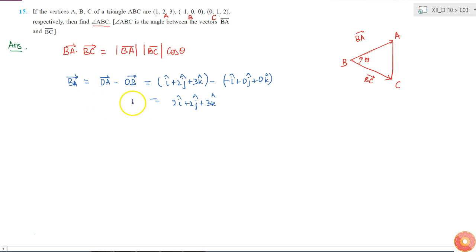The magnitude of BA equals square root of 2 squared plus 2 squared plus 3 squared, which equals square root of 4 plus 4 plus 9, which is root 17.